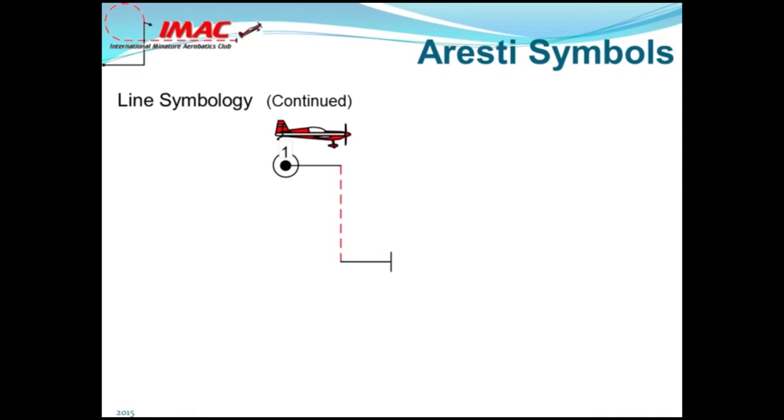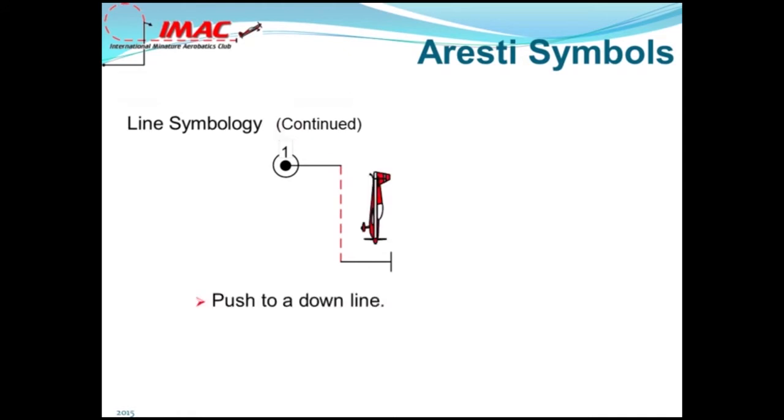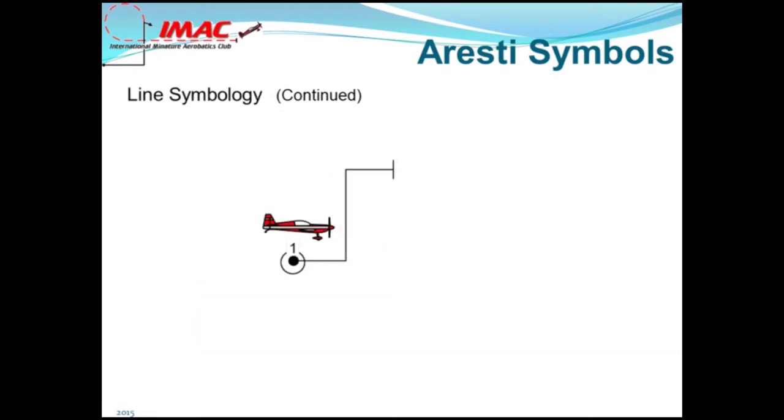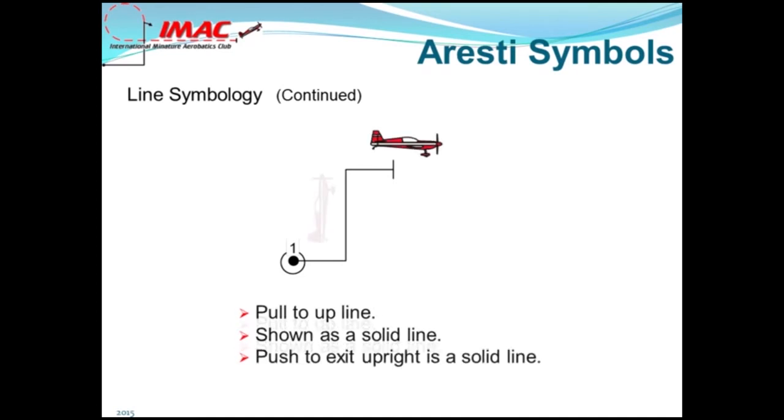In figure one, the plane would begin wings-level horizontal upright flight. The pilot would push to a vertical downline. Negative g's, shown with a dashed line. Imagine sitting in the aircraft as it pushed to a vertical downline. You would have the sensation of being lifted out of the seat. This is negative g flight and is drawn with dashed lines. The pull to upright is shown as a solid line, indicating positive or upright flight. This figure begins wings-level horizontal flight, pull to an upline shown as a solid line. The pilot would be pushed down into the seat and would feel the sensation of positive g's. Push to an exit upright is shown here as a solid line.